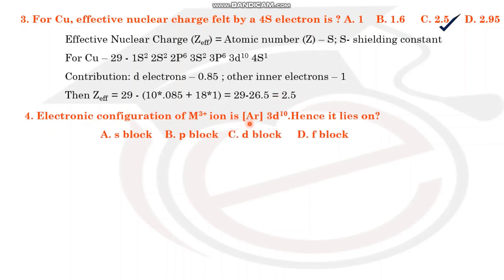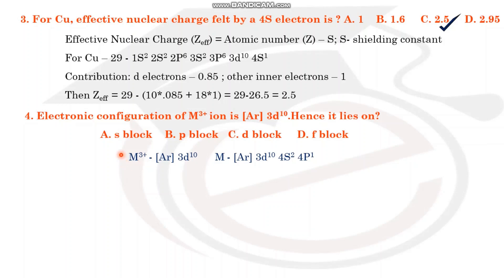Fourth question: the Cu3+ ion has configuration 3d10. It lies in which block — s, p, d, or f? The answer is d-block, because the last electron enters the d orbital. The configuration of Cu3+ is 3d10.